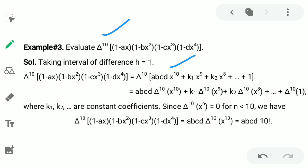So if you see the coefficients if you look at it, then (1-ax)(1-bx²)(1-cx³) and (1-dx³). This means a, b, c, d that will be the coefficient of x ki power 10.